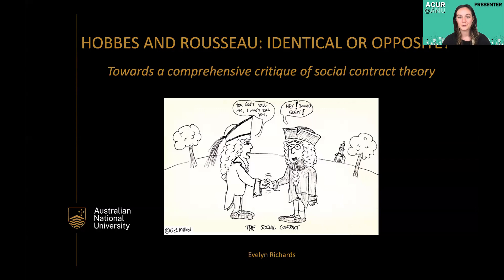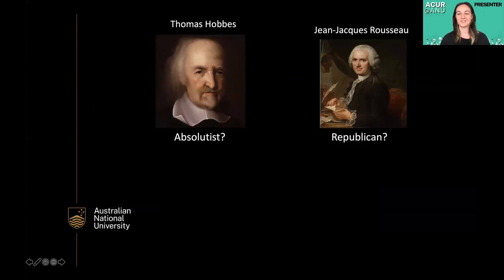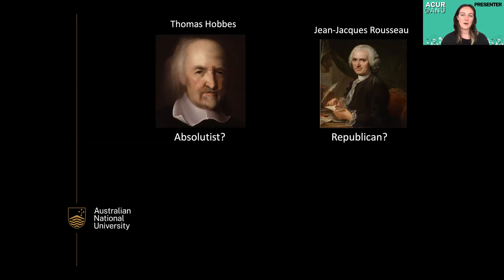Thomas Hobbes and Jean-Jacques Rousseau are both Enlightenment thinkers, hugely influential in political philosophy, and have both produced theories using social contract theory. The literature on social contract theory understands these authors as producing opposite ideas about political structure. Hobbes is understood as an absolutist, advocating for a political system where the government has absolute power, while Rousseau is understood as a republican who advocates for a system where the people give permission to the government to rule over them.